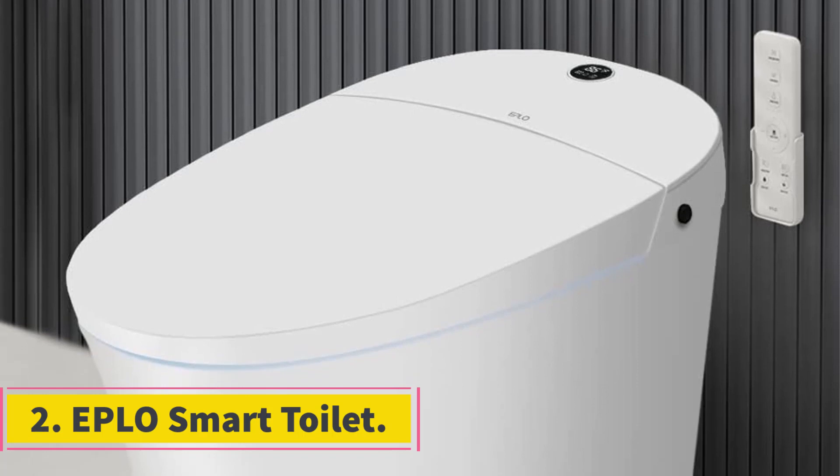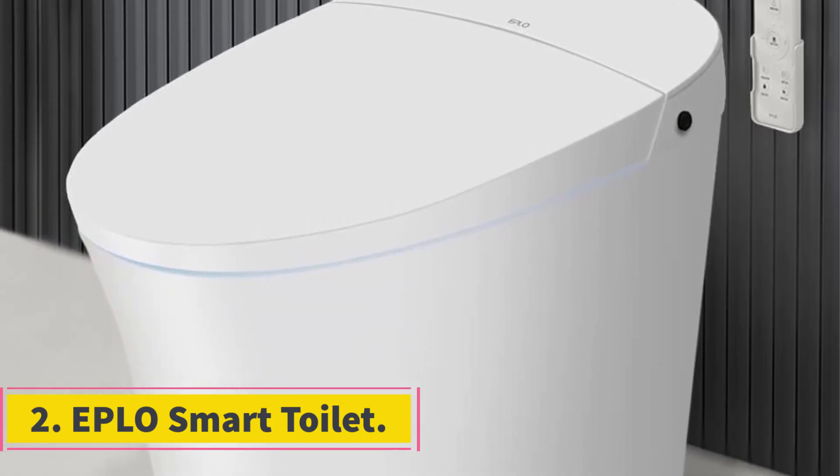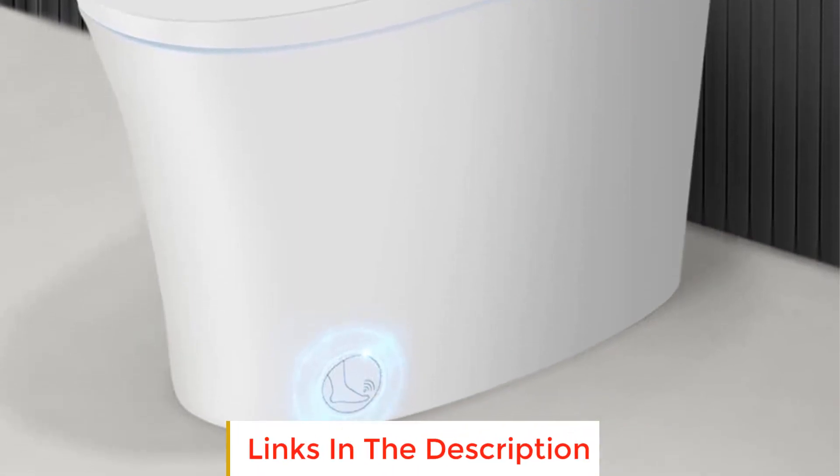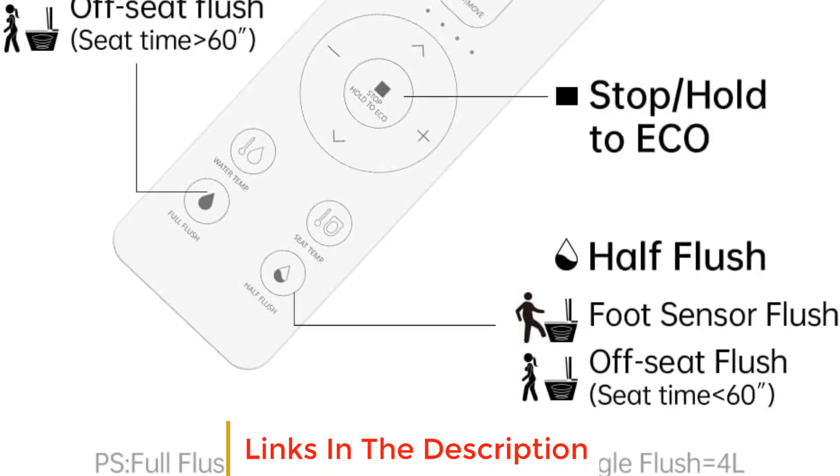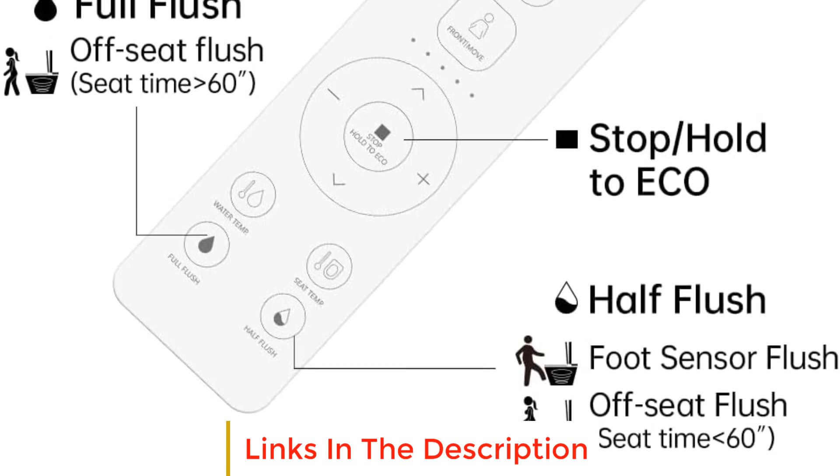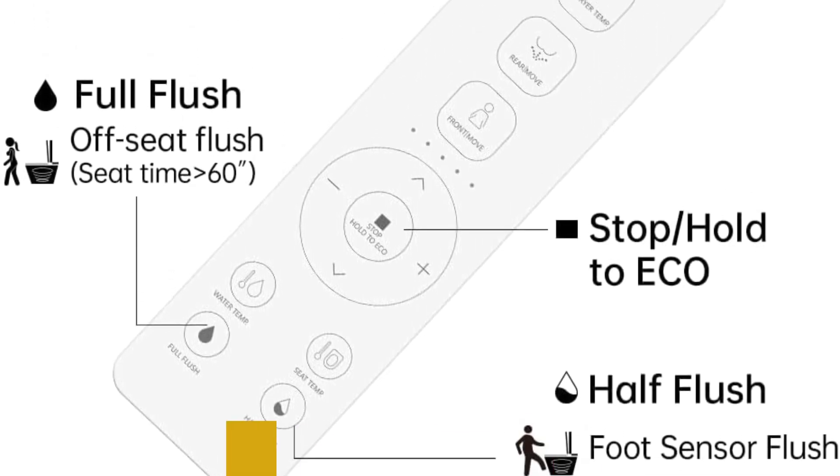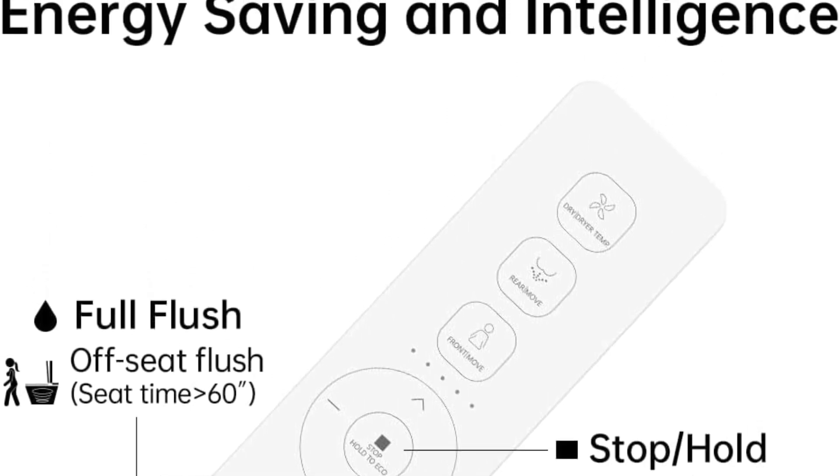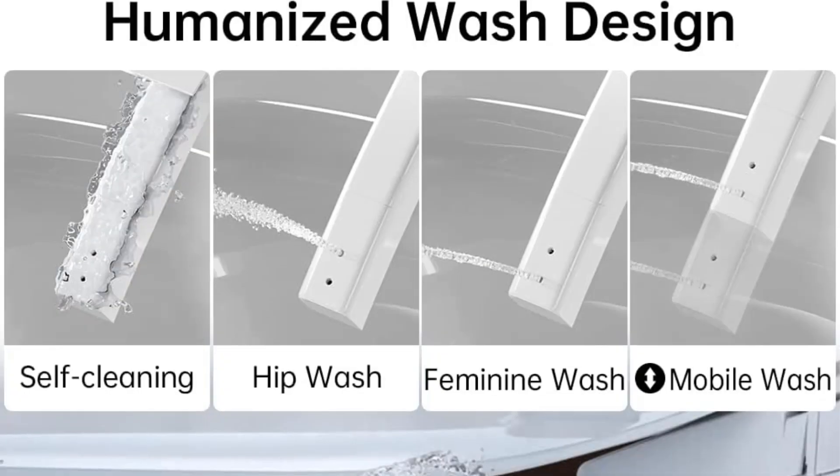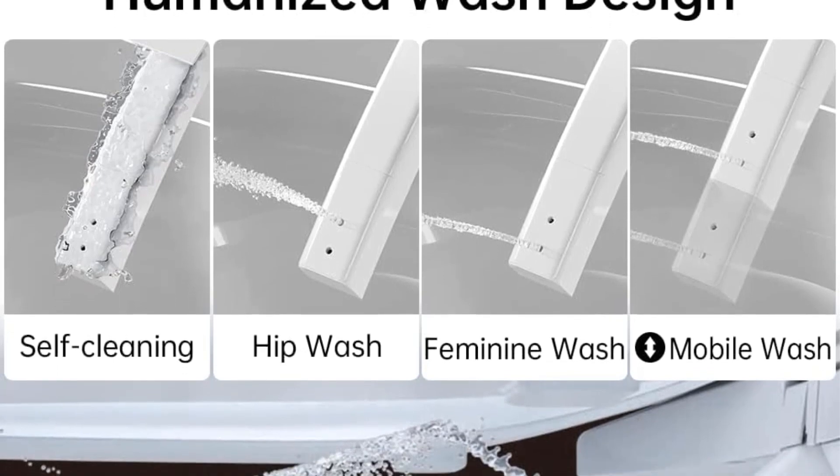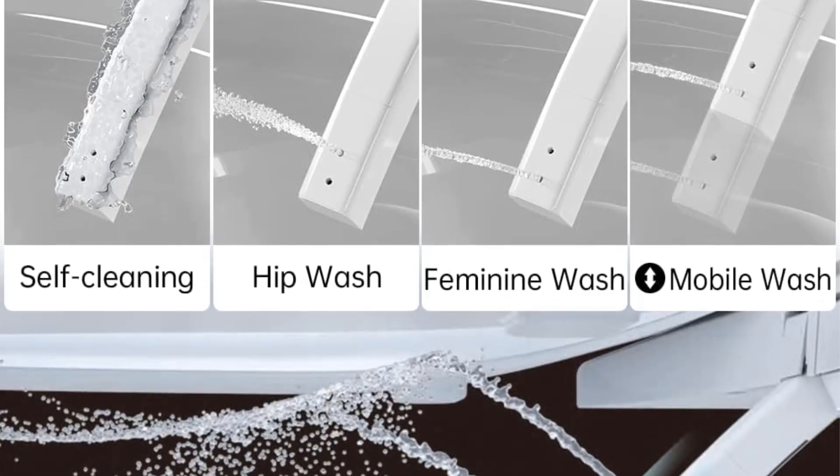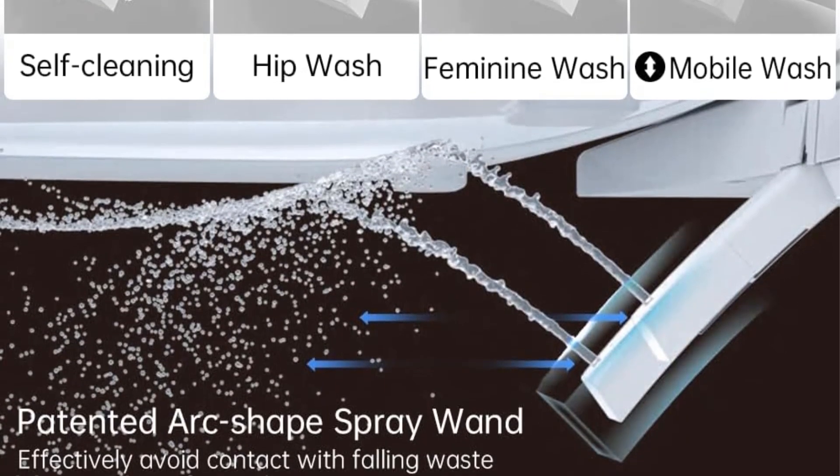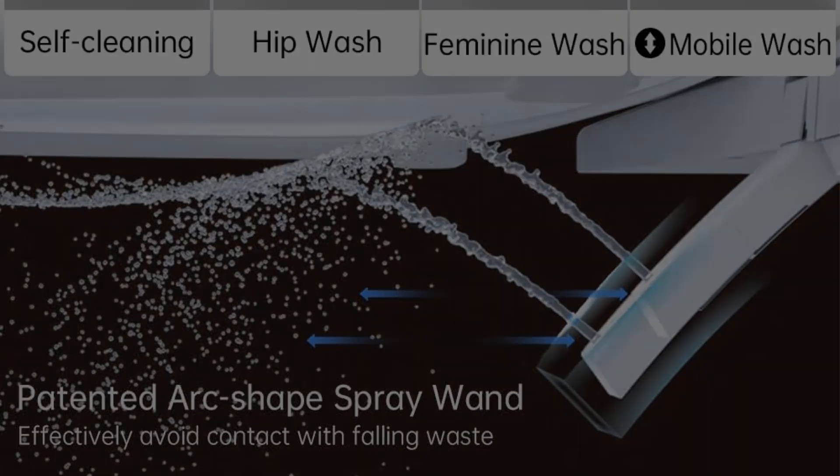Number 2. Eplo Smart Toilet. The Eplo Smart Toilet is a cutting-edge bathroom fixture that combines minimalist style, convenience, and advanced features to enhance personal hygiene and comfort. This one-piece toilet is designed to offer a full suite of innovative functionalities, making it a smart addition to any modern bathroom. The smart toilet boasts several convenient features to provide a luxurious and comfortable experience. Users can enjoy a heated seat for added warmth, especially during colder seasons.